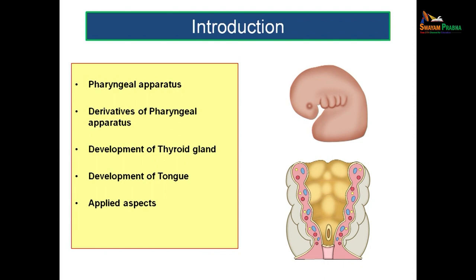In this session, we will be dealing with the development of the pharyngeal apparatus, derivatives of the pharyngeal apparatus, development of the thyroid gland, development of tongue, and a little bit of applied aspects. First, let us see what do you mean by a pharyngeal apparatus.